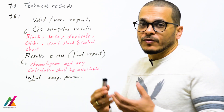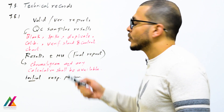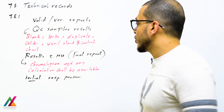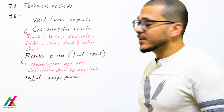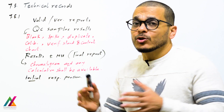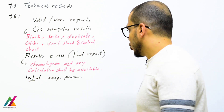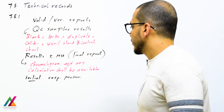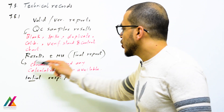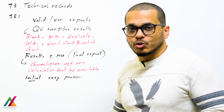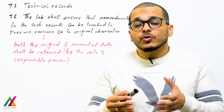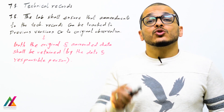A control chart is also very important. In the final report, you will have results plus or minus measurement uncertainty, where measurement uncertainty accounts for all factors affecting the measurement results. You will also have the chromatogram from the instrument, and any calculations you perform shall be available at all times. Each technical record shall include the initial of the responsible person.